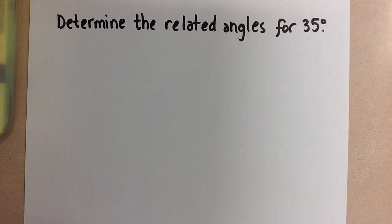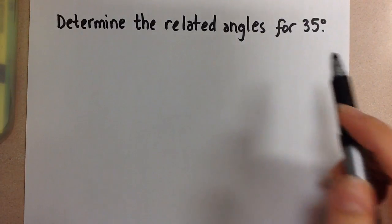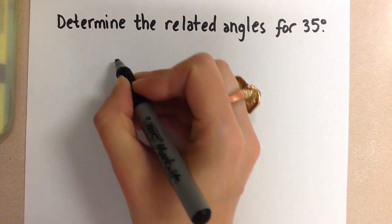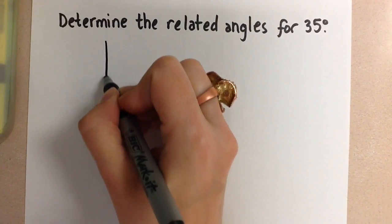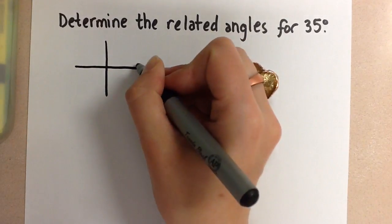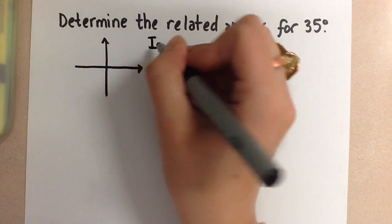Hi guys, Mrs. A here. We are going to determine the related angles for the angle 35 degrees. Now this means that we have to find the principal angle that falls into each of the four quadrants.